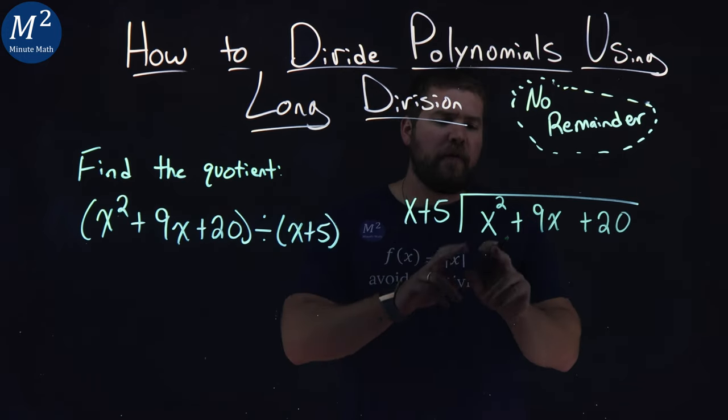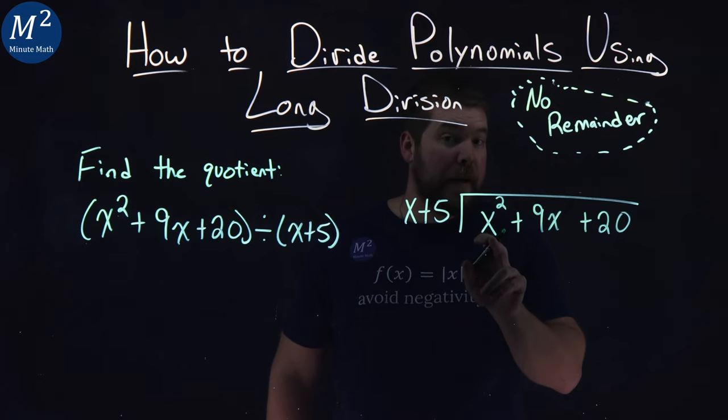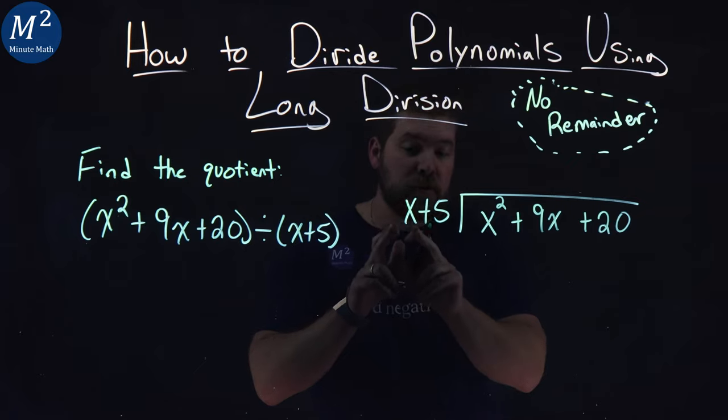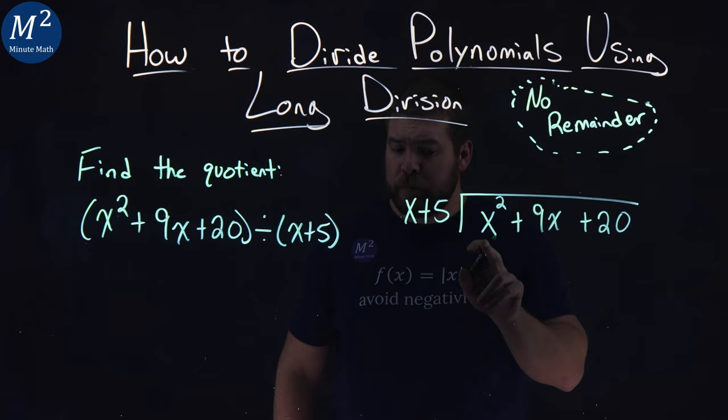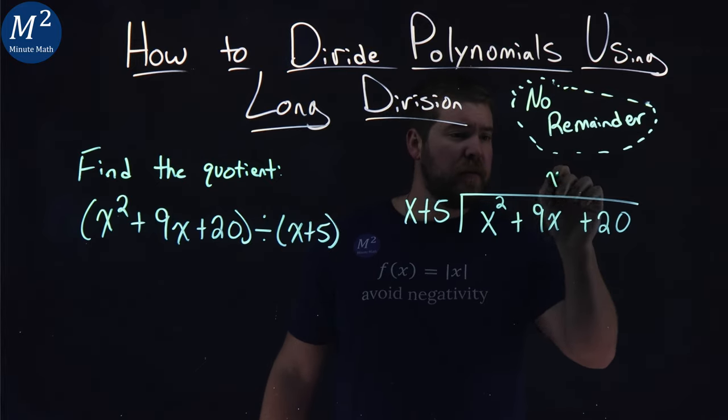Now we want to focus on our first term, the x squared term right here. What multiplied by just looking at this first x here gets me x squared? That's going to be just an x. So I line it up over the 9x right here.